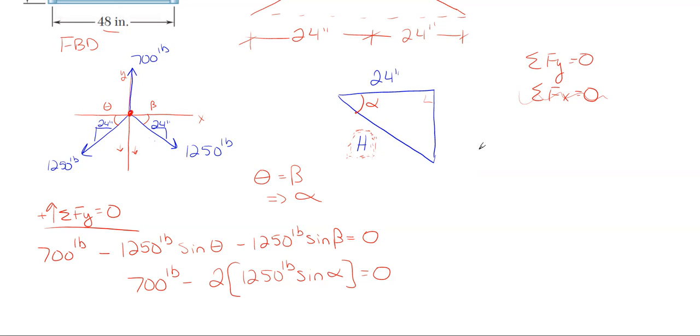Let's rearrange for alpha and it'll be cosine inverse of 24 over H. Now I have something in terms of what I'm looking for, which is my hypotenuse side, which is half the length of my chain. Let's take this whole thing and dump it in here for alpha.